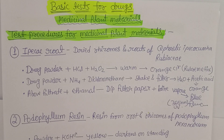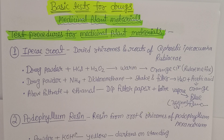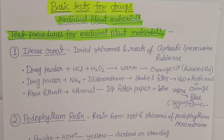Hello students. We are going to discuss the basic tests for drugs under medicinal plant materials. As we discussed in the last class, basic tests for drugs apply to pharmaceutical substances, medicinal plant materials, and pharmaceutical dosage forms. As a quality control pharmacist, if any drug is selected randomly from a manufacturing unit and comes for testing,